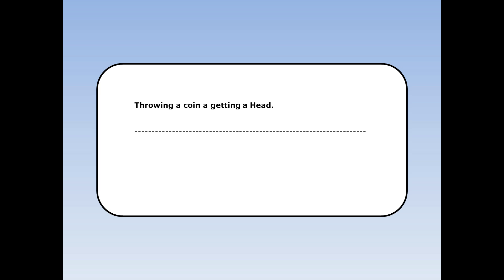If I throw a coin, what's the probability of getting a head? The number of things we want to happen is 1, because there's one way of getting a head. The total number of things that could happen is 2, because there's either a head or a tails. The probability is 1 over 2, or a half.